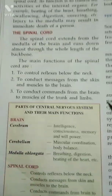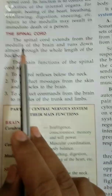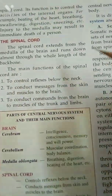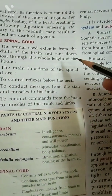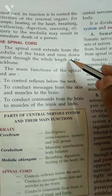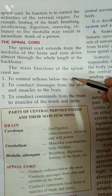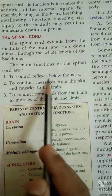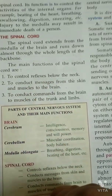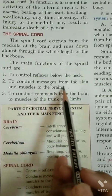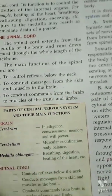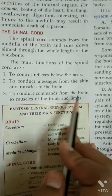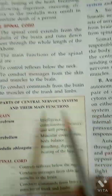The spinal cord extends from the medulla of the brain and runs down almost through the whole length of the backbone. The main functions of the spinal cord are: to control reflexes below the neck, to conduct messages from the skin and muscles to the brain, and to conduct commands from the brain to the muscles of the trunk and limbs.